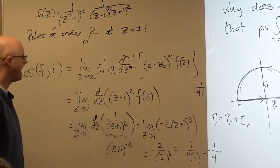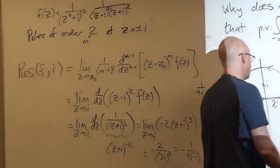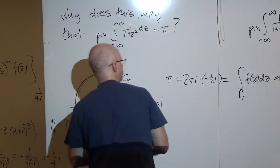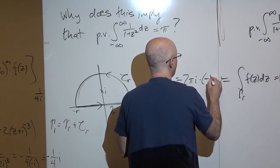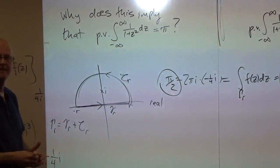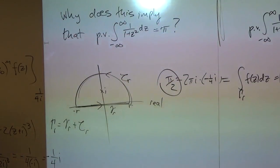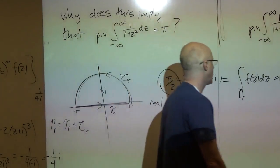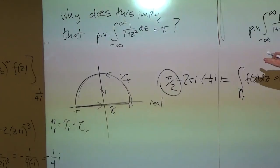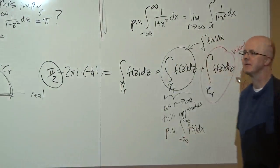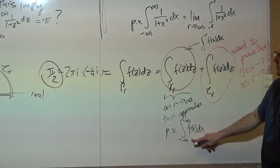The residue is −1/4 i, so the integral over the contour for this example is 2πi times −1/4 i, which gives π/2. That's the value for the contour integral for any fixed r. Letting r go to infinity, since the denominator has degree two or more greater than the numerator, the semicircle integral goes to zero, the straight part approaches the principal value, which stays at π/2. Therefore the principal value of the improper integral is π/2.